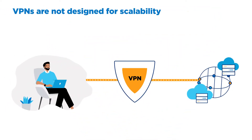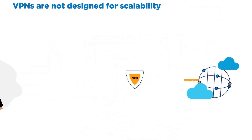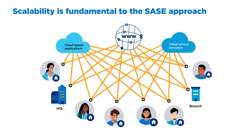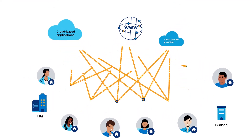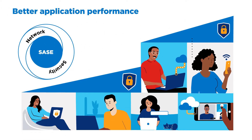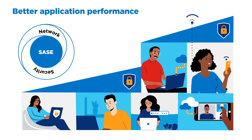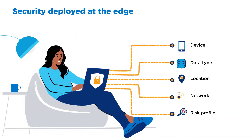VPNs were never designed with scalability in mind, but scalability is fundamental to the SASE approach. Now you can quickly provide new services in the cloud, accommodate thousands of remote workers, deploying security inspection at local edge nodes closer to users for greater security and improved performance.